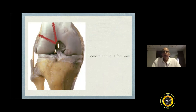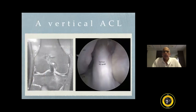The femoral footprint is supposedly the most important because the majority of errors occur on this side. You want a femoral tunnel which has coronal obliquity because that can improve rotational control after an ACL reconstruction. You do not want a vertically placed ACL — the ACL graft being vertical cannot obliterate even a minor degree of pivot shift. Therefore, obliquity of the ACL graft is extremely important.